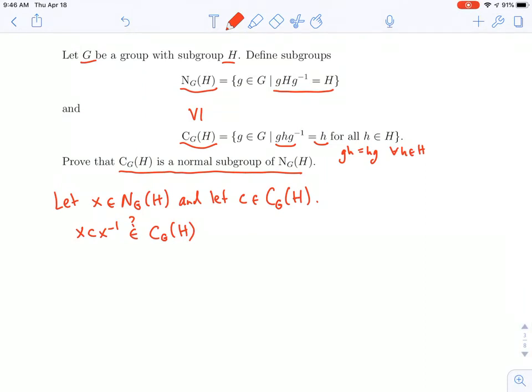That's what it would mean to show that a subgroup is normal in a larger group. You take an arbitrary element of the subgroup, that's my little c, and then I take an arbitrary element of the larger group, that's my x, and I conjugate c by that x. To determine whether or not this is in the centralizer of H, I need to check the condition to be in the centralizer of H.